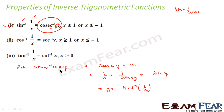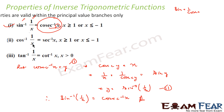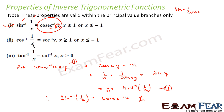Since the LHS gave y = cosec⁻¹(x) and we derived y = sin⁻¹(1/x), both equal to y, we conclude sin⁻¹(1/x) = cosec⁻¹(x). Please note these properties are valid only for principal value branches.